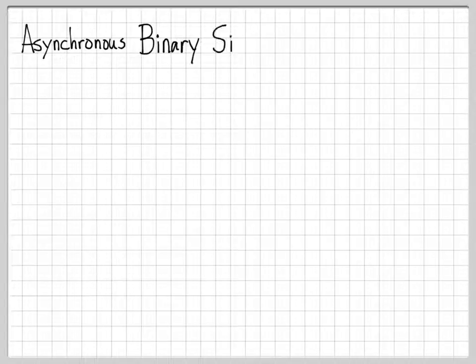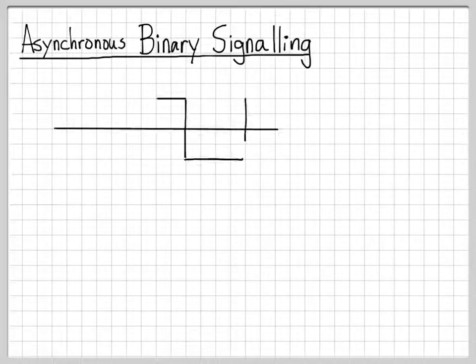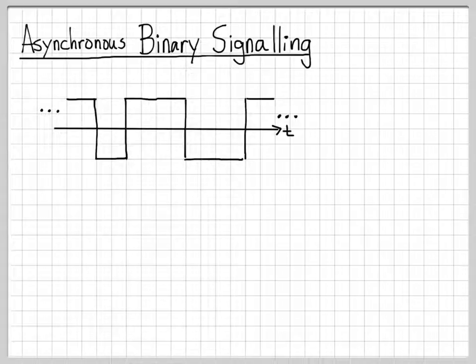Asynchronous binary signaling is a random process. A sample function might look like this: it's a signal that toggles between two values with the shape of a rectangular pulse. This looks like a square wave. The width of that square wave is capital T, the symbol time or signal period we often use in communications theory. That's how long each rectangular pulse lasts.